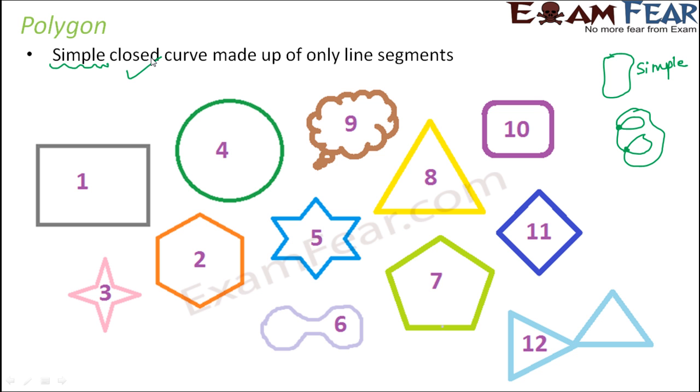Closed curve. So polygon has to be a simple curve, it has to be a closed curve, and it must be made up of only line segments. So let us look at the examples here. Number one here, this is a closed curve because it is a totally closed figure. Is it a simple curve? Yes, because the lines do not cross over each other. Is it made up of only line segments? Yes, it is made up of four line segments. So this is a polygon.